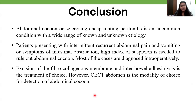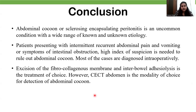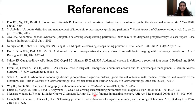Conclusion: Abdominal cocoon or sclerosing encapsulating peritonitis is an uncommon condition with a wide range of known and unknown etiologies. Patients presenting with intermittent recurrent abdominal pain and vomiting or symptoms of intestinal obstruction require a high index of suspicion to rule out abdominal cocoon. Most cases are diagnosed intraoperatively. Excision of the fibrocollagenous membrane and inter-bowel adhesiolysis is the treatment of choice. However, CECT abdomen is the modality of choice for detection of abdominal cocoon. Thank you.